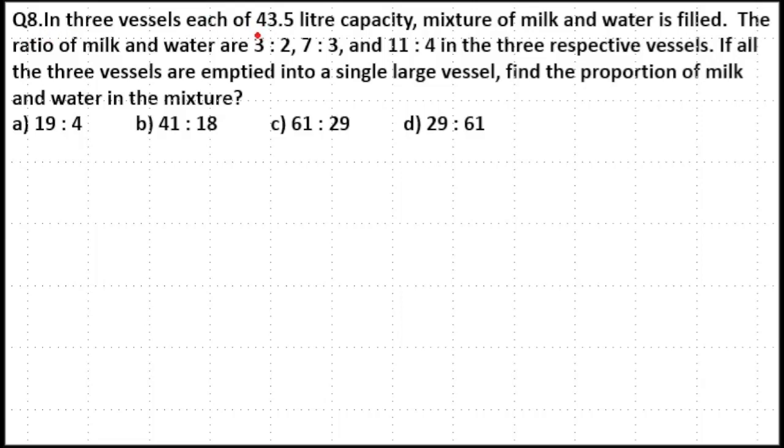In 3 vessels each of 43.5 litre capacity, mixture of milk and water is filled. The ratio of milk and water are 3 is to 2, 7 is to 3, and 11 is to 4 in the 3 respective vessels. If all the 3 vessels are emptied into a single large vessel, find the proportion of milk and water in the mixture.